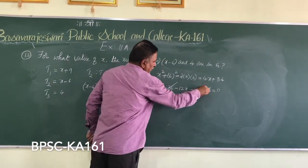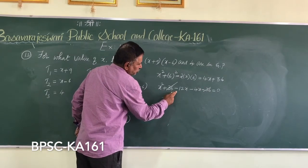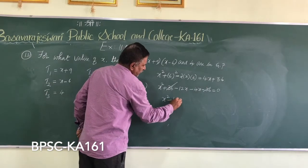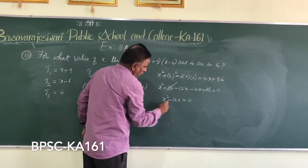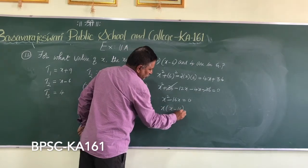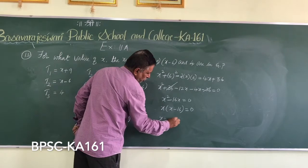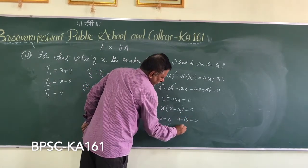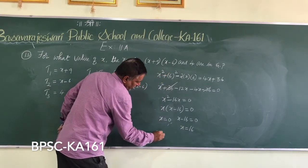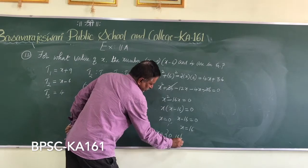Bringing everything to the left side: X squared plus 36 minus 12X minus 4X minus 36 equals 0. The plus 36 and minus 36 cancel, and combining like terms gives X squared minus 16X equals 0. Taking X common: X times (X minus 16) equals 0. So X equals 0 or X equals 16.